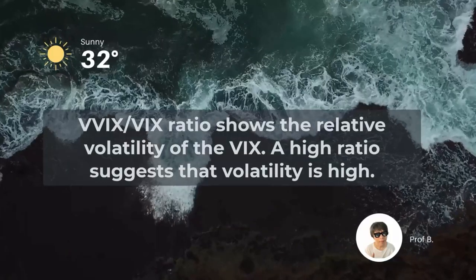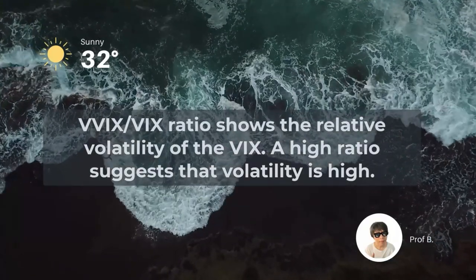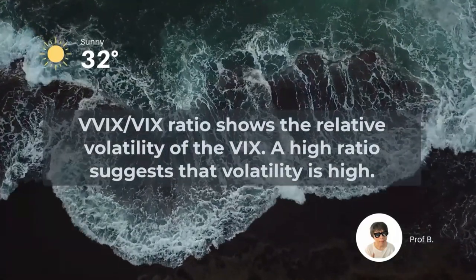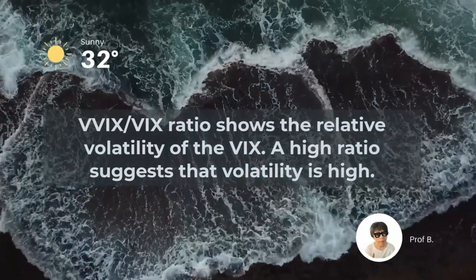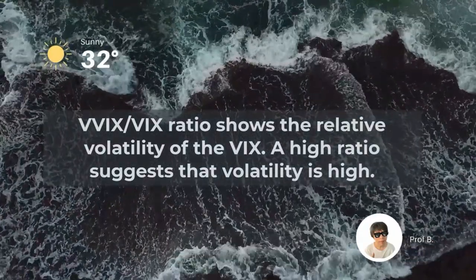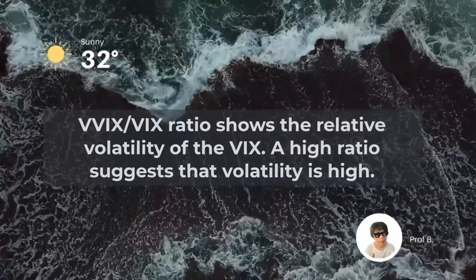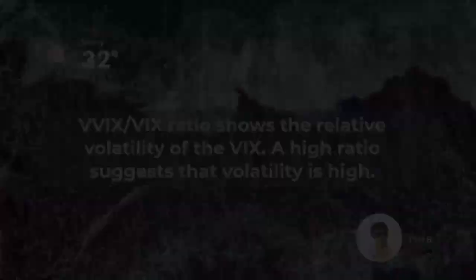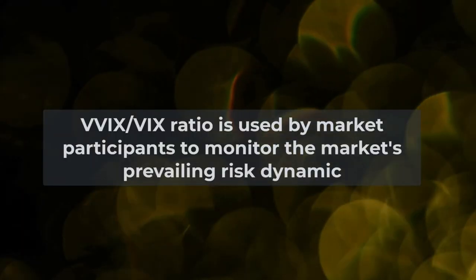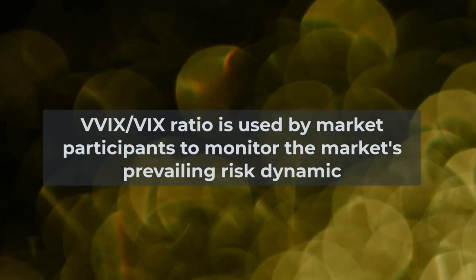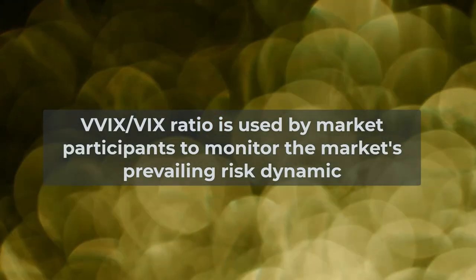Whether fear is volatile is most important to us. Why? If the market is fearful and that fear is very volatile, it means the market is jittery. The VIX of VIX ratio helps investors and traders assess the relative volatility of the VIX, and it can indicate when VIX isn't very volatile and so isn't foreseeing much volatility in the S&P 500. The ratio is used by market participants to monitor the market's prevailing risk dynamic.